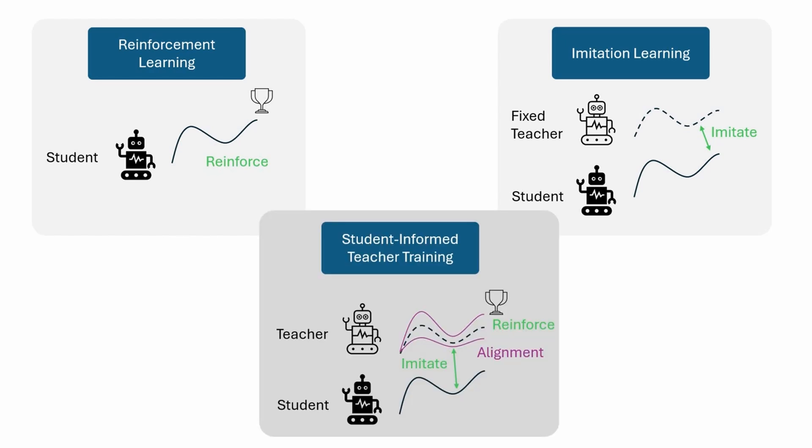To address this teacher-student asymmetry, we propose a framework for joint training of the teacher and student policies. In our framework, the teacher is encouraged to learn behaviors that can be imitated by the student, despite the limited access to information and partial observability of the student.